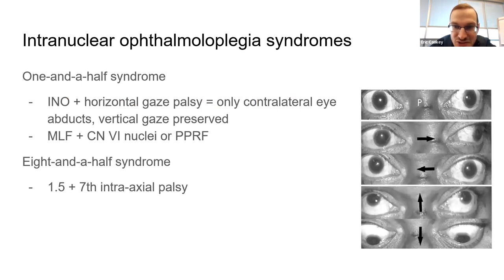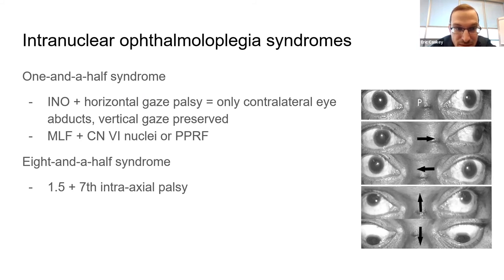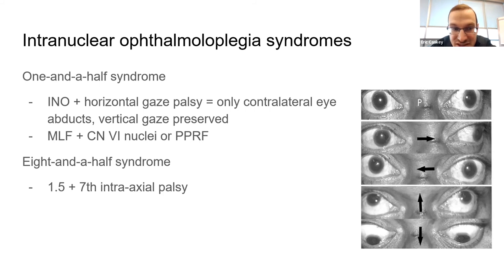One-and-a-half syndrome: an INO plus horizontal gaze palsy — you're including the sixth nucleus in addition to the MLF. The eight-and-a-half syndrome adds the seventh nerve fasciculus, giving you a seventh nerve palsy on top of the one-and-a-half.